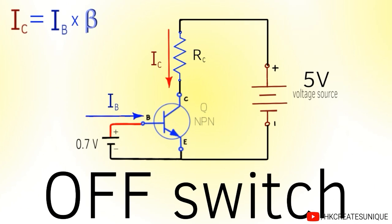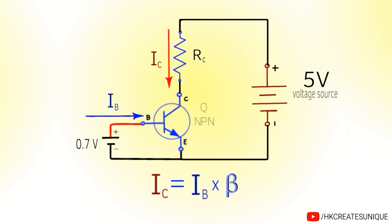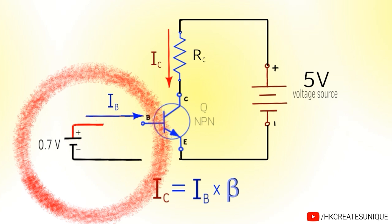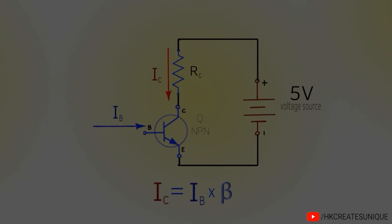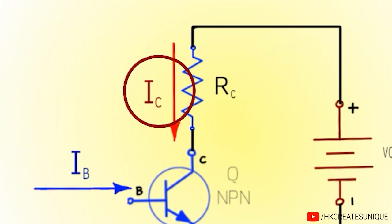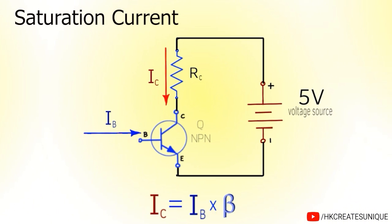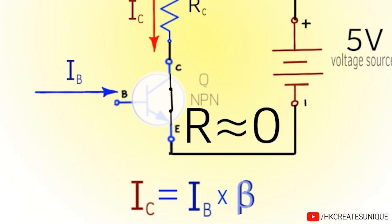To use transistor as an OFF switch, the collector current must equal zero. And for the collector current to be zero, the base current should also equal zero. This is done by removing the signal voltage. And this way the transistor acts as an open circuit or as an OFF switch. To use transistor as an ON switch, we must provide a base current which will produce maximum possible collector current or saturation current. This way the transistor acts as a closed key which has negligible resistance.